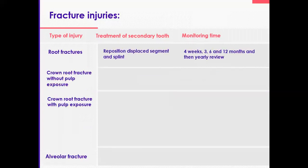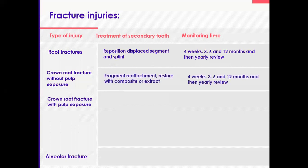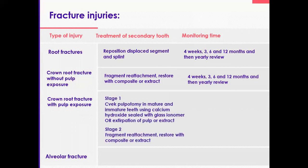We then moved to root fractures and talked about repositioning and splinting — the first time we discussed splinting. Remember, no root canal treatment is required as a first line of treatment. Review at four weeks to remove the splint if it is a flexible one, then three, six, and twelve months, and annually for five years. Cervical fractures need splinting for a longer period and require a rigid splint. Yesterday we covered crown-root fractures with or without pulp exposure. Depending on severity, you either reattach and review, perform pulpotomy or root canal treatment, or extract. This was the first time root canal was included as a first-line treatment.